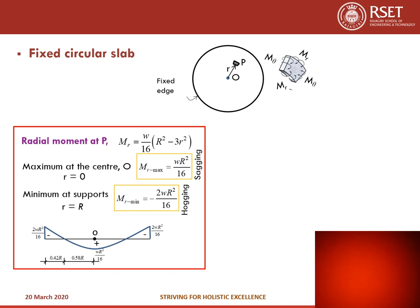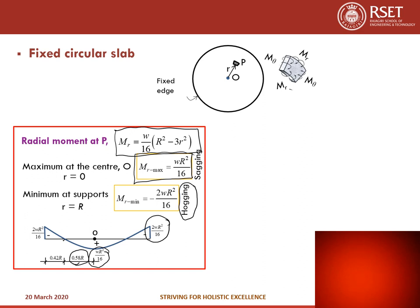For a fixed circular slab, the radial moment M_R = (w/16)(R² - 3r²). The maximum value at the center (r = 0) is wR²/16, a sagging moment. The minimum value at the support (r = R) is -2wR²/16, a hogging moment. The zero bending moment occurs at a distance of 0.58R from the center.